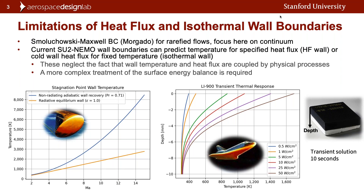The heat flux boundary condition allows you to specify a fixed heat flux at the wall. A common choice might be an adiabatic wall, and while at lower speeds this gives a good prediction of wall temperature even in the high supersonic regime, as soon as you move into the hypersonic regime the wall temperature grows at a non-physical amount because you're not capturing radiated black body radiation from the wall to cool it.